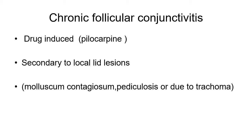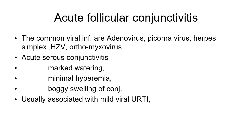Acute follicular conjunctivitis is marked by watering, minimal hyperemia, and boggy swelling of conjunctiva (chemosis). This conjunctivitis is usually associated with mild viral upper respiratory tract infection. Common causative viruses include adenovirus, picornavirus, herpes simplex virus, and orthomyxovirus.